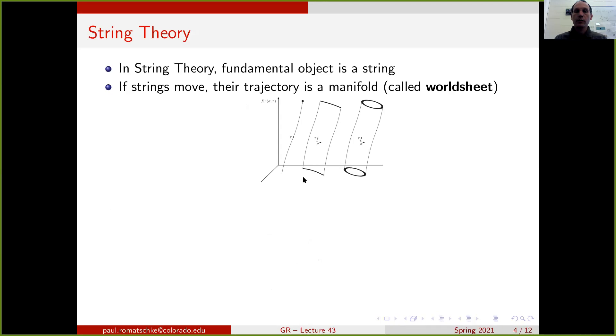If the string is open, then the trajectory looks like this sheet here. If the string is a closed string, then the trajectory will look like a tube. This is to be contrasted with the worldline of a point particle that's also highlighted in this slide. If strings interact, the interaction looks different from the vertex. It has this extended form that's more like a tree branch structure.